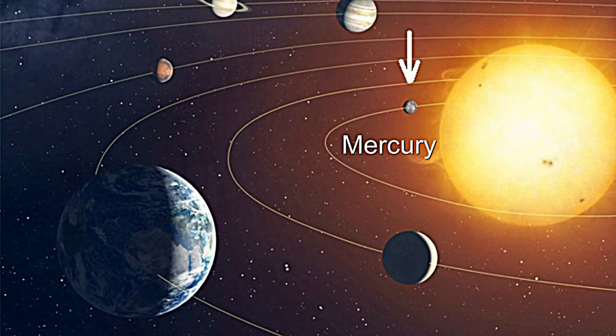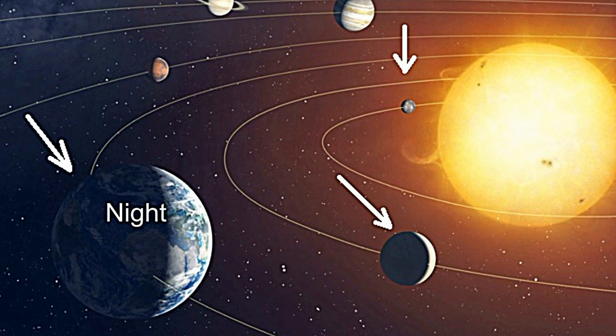You have Earth. Mercury and Venus is on the same plane as Earth as the rest of the other planets in the solar system.